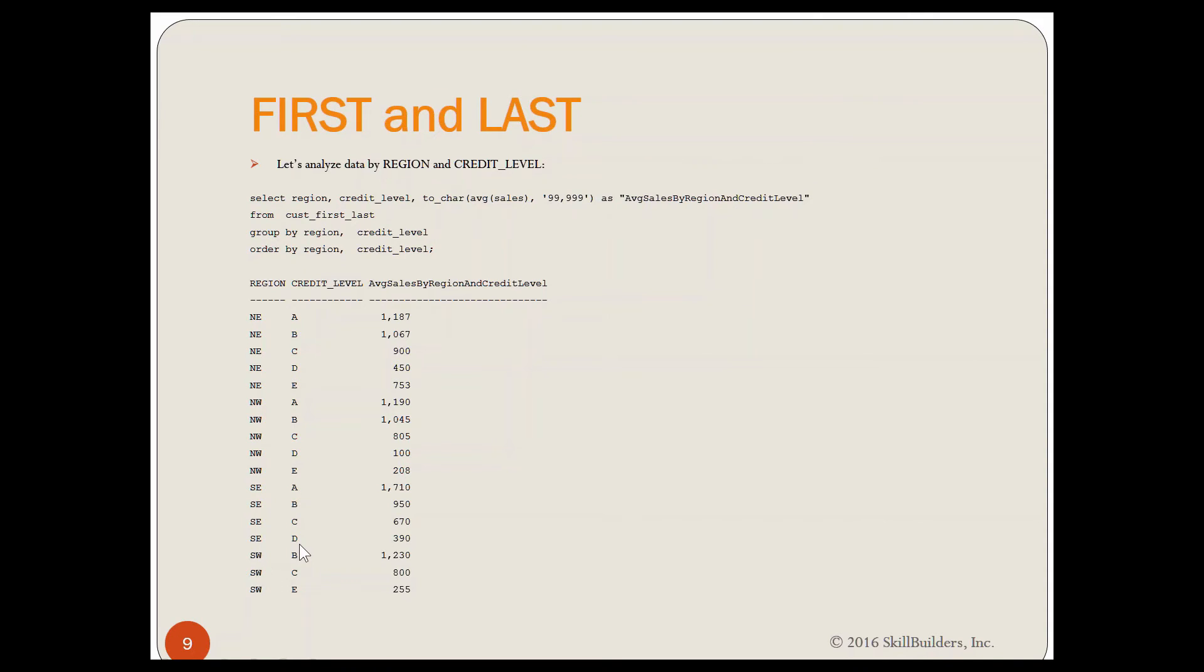Southeast has A, B, C, and D does not have an E. So the worst is a D, and that's where the first and the last comes in. The first is going to be an A for Southeast. The last is going to be a D when you base it on credit level. For Southwest, the first is going to be a B, the last is going to be an E. So that's why we can't, you know, that's where first and last come in, because you may not have all the values, and you may not know what values you really want. You just want the best and the worst or the lowest and the highest or whatever.